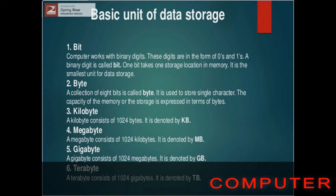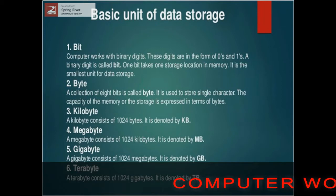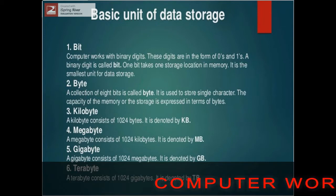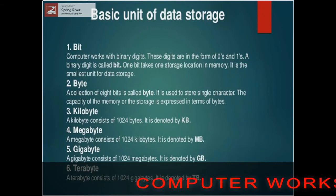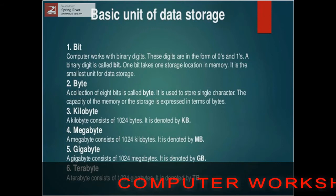One exabyte is equal to 1024 petabytes. One zettabyte is equal to 1024 exabytes. And last, one yottabyte is equal to 1024 zettabytes.